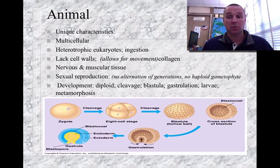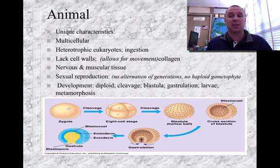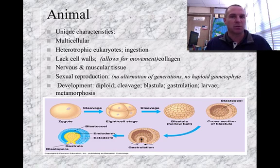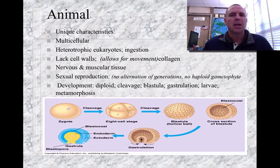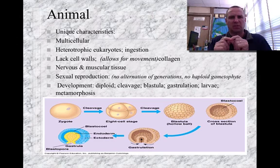They reproduce sexually through haploid cells that make diploid cells. They do not have a haploid gametophyte that can survive on its own — no alternation of generations like plants do. Development goes basically from a zygote, a diploid cell, and it goes through a process of cleavage.